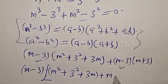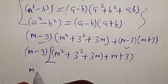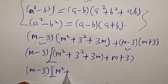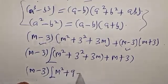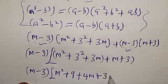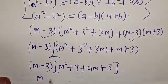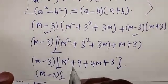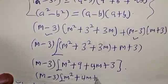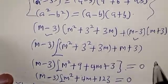Factoring out m minus 3, we get m minus 3 times the quantity m squared plus 9 plus 3m plus m plus 3, which simplifies to m minus 3 times m squared plus 4m plus 9 plus 3, giving m minus 3 times m squared plus 4m plus 12 equal to zero.